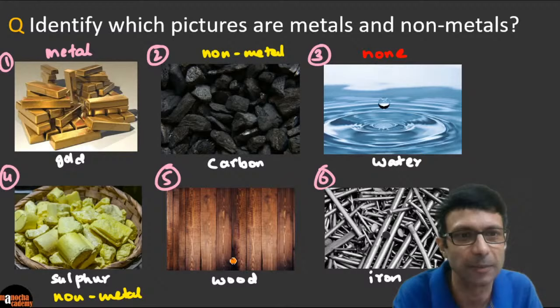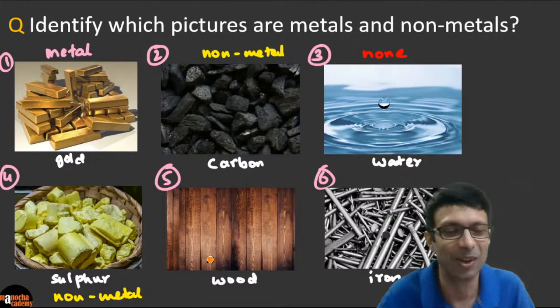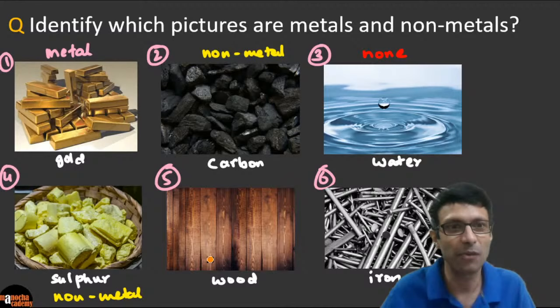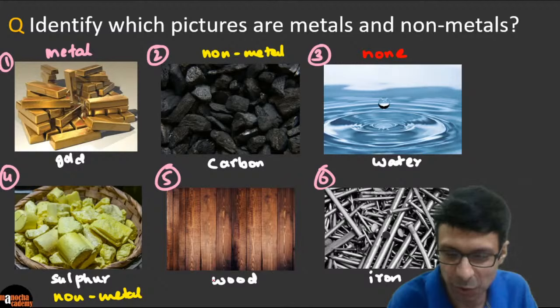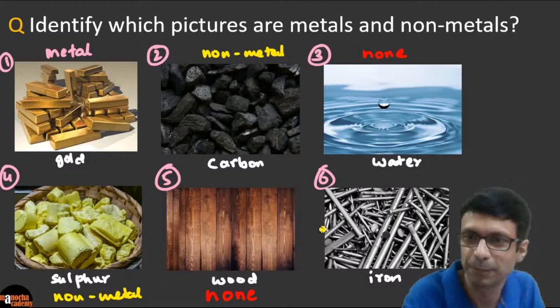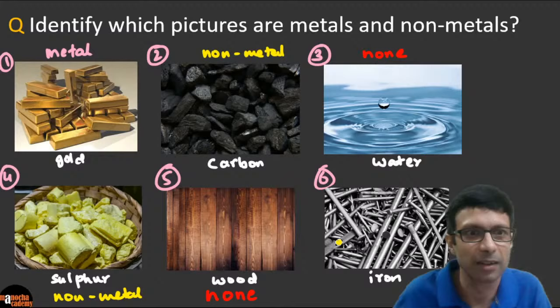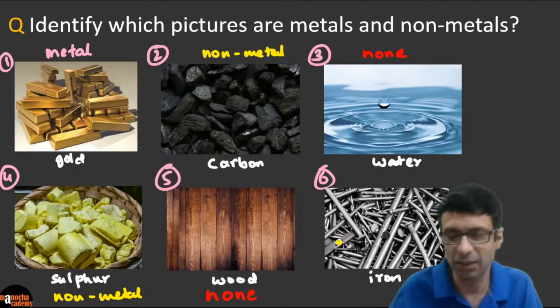I have three options now: metal, non-metal, or none. Some of you are saying non-metal, but a lot of you are saying 'none' — and wood is also falling in that category. We'll discuss why. And what about iron — the sixth picture? Iron is definitely a metal.